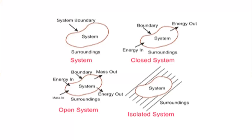When talking about a system, what comes to mind is a confined space which we are interested in analyzing. A system is not a very fixed portion - it is basically anything which we are interested in analyzing from a thermodynamic perspective. For example, if I am interested in analyzing an IC engine, then the internal combustion engine becomes my system and everything around that engine becomes the surroundings. Or if I want to analyze a gas turbine, then the gas turbine becomes my system. A system generally needs to have a boundary which separates it from the surrounding.